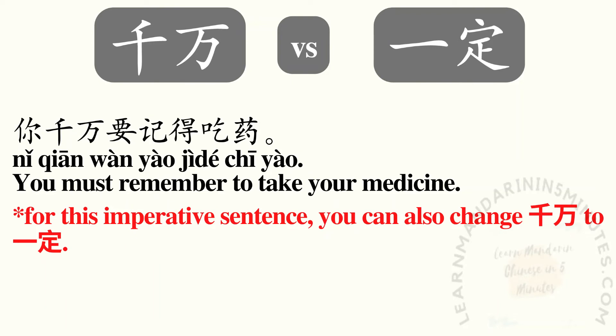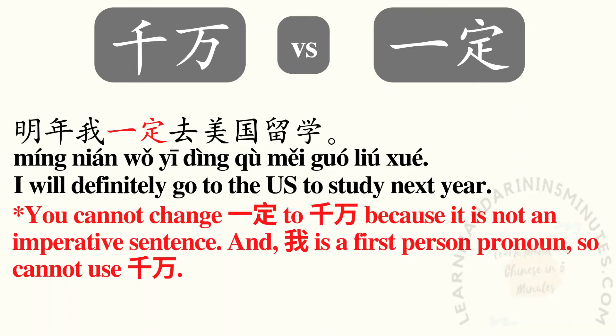你千万要记得吃药。 You must remember to take your medicine. For this imperative sentence, you can also change 千万 to 一定. 明年我一定去美国留学。 I will definitely go to the US to study next year. For this sentence, you cannot change 一定 to 千万, because it is not an imperative sentence and 我 is a first person pronoun, so you cannot use 千万.